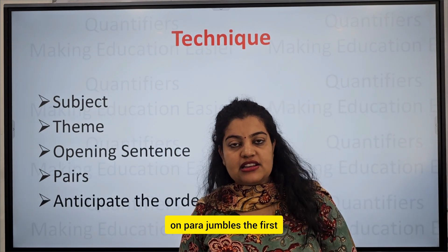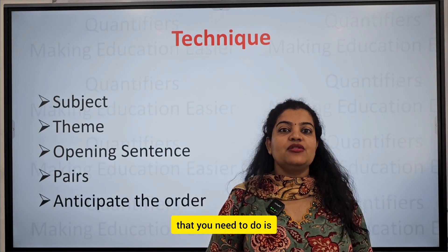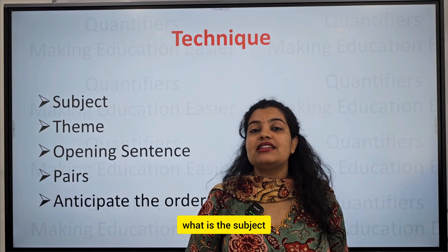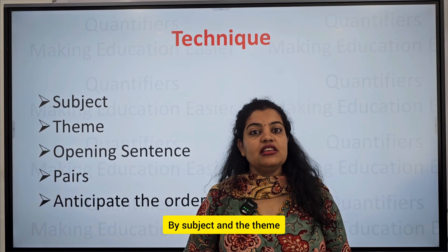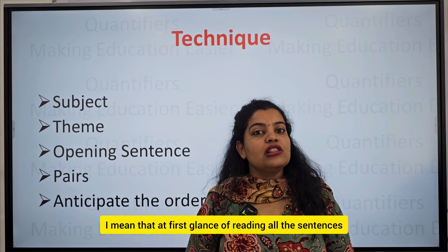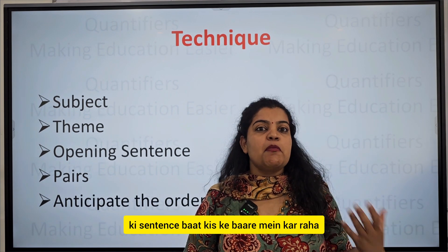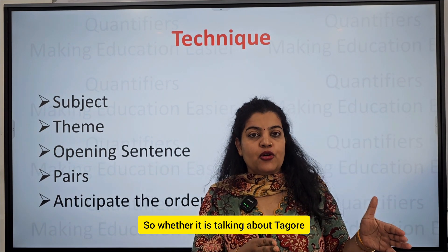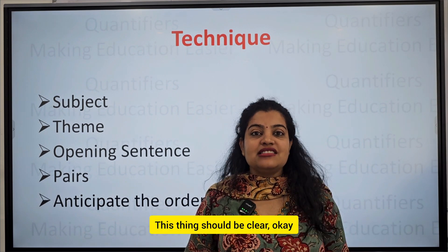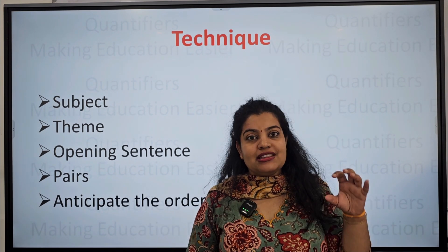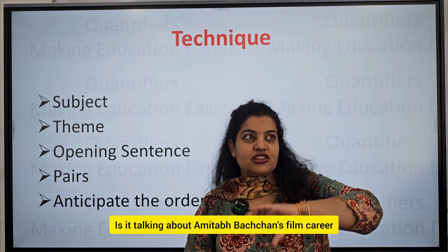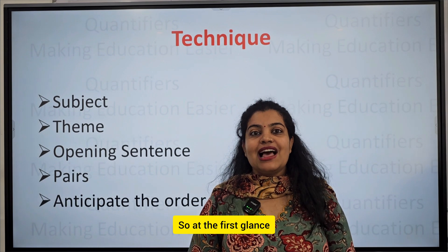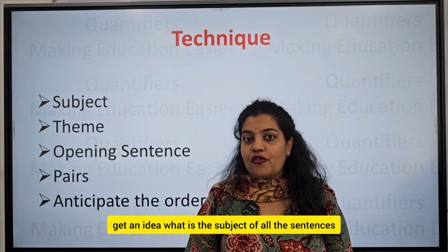Wherever you get questions on para jumbles, the first and foremost thing you need to do is read all the sentences carefully and try to figure out what the subject and theme are. At first glance, you should be clear what the sentences are talking about — whether it's about Shakespeare, Amitabh Bachchan's film career, or his personality traits. Get an idea of the subject and theme of all the sentences.